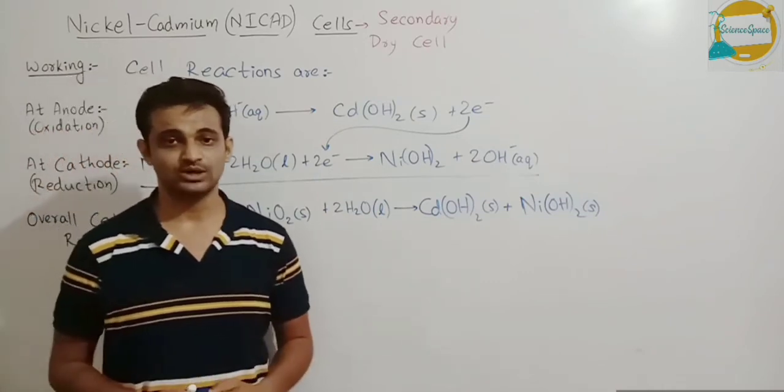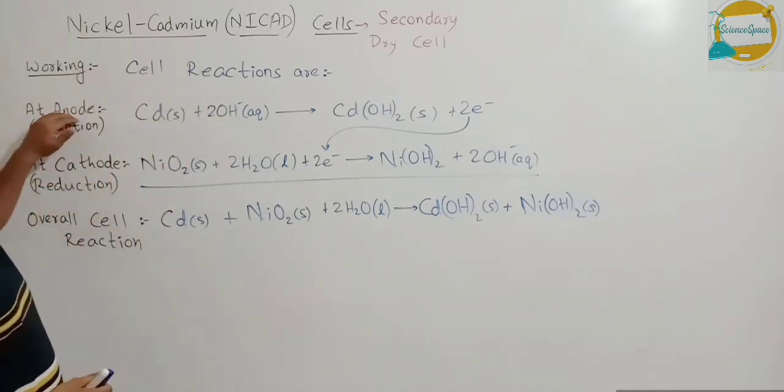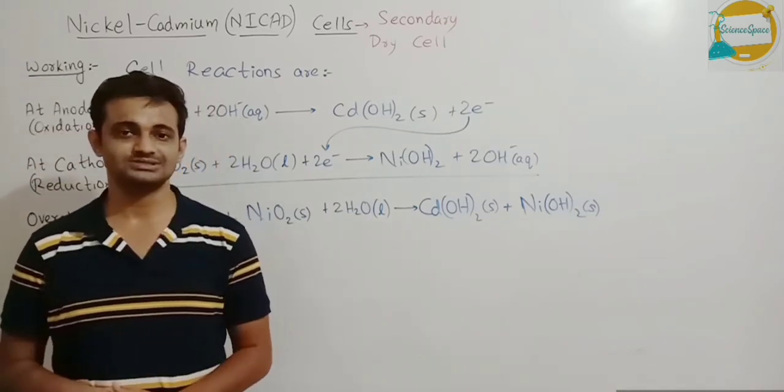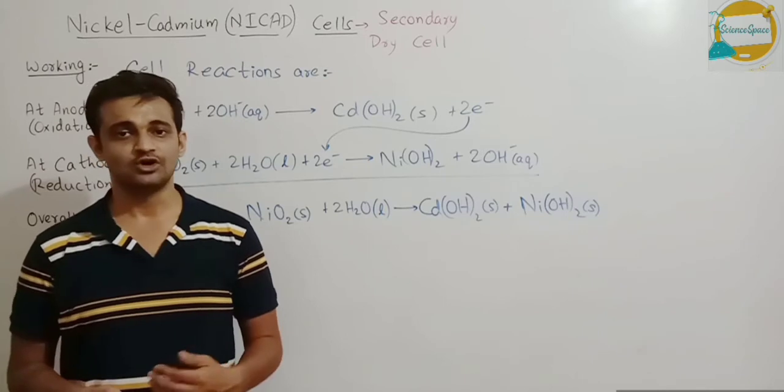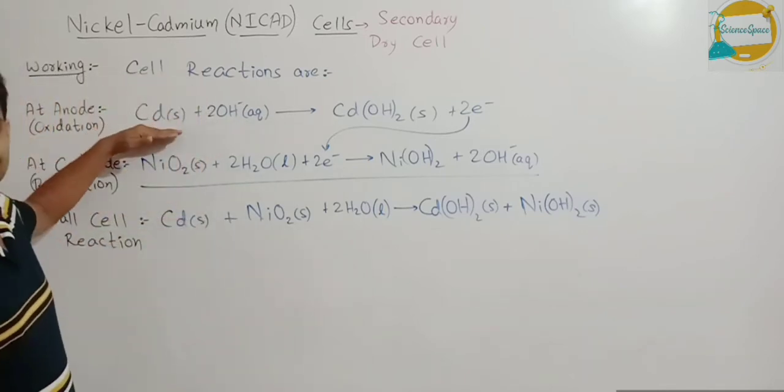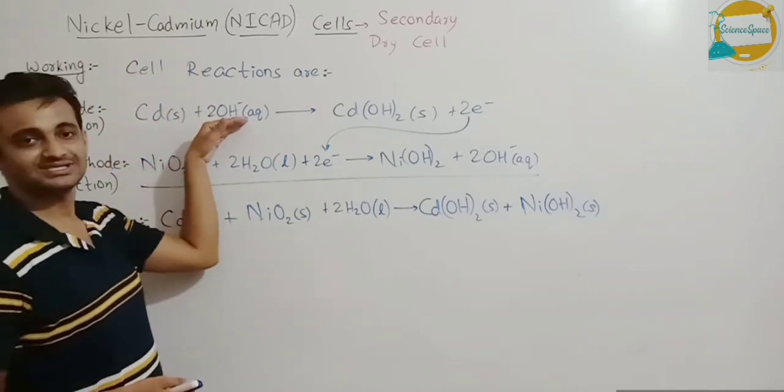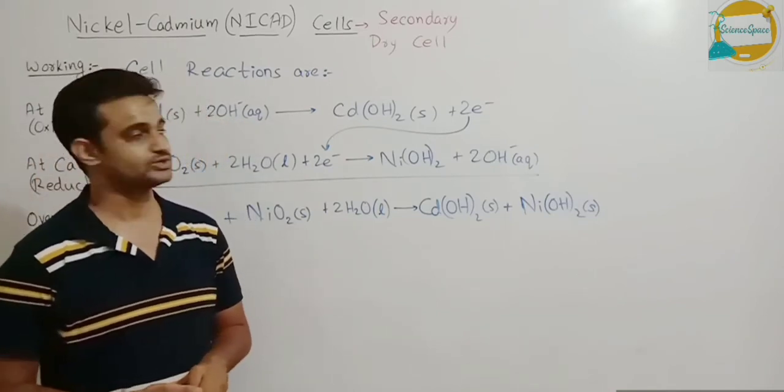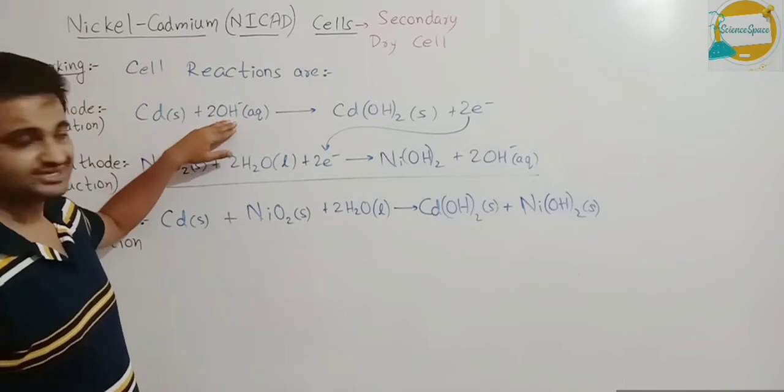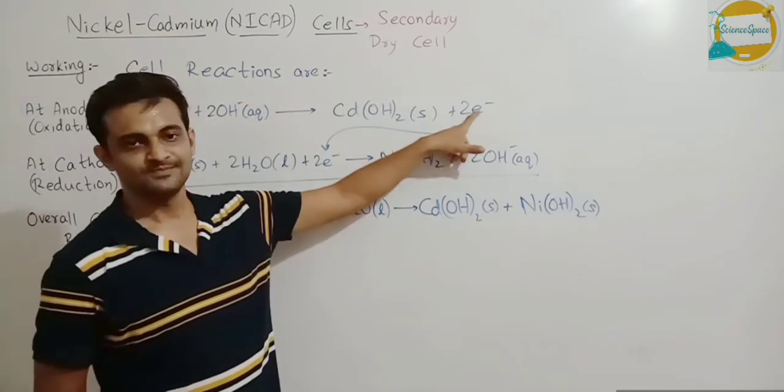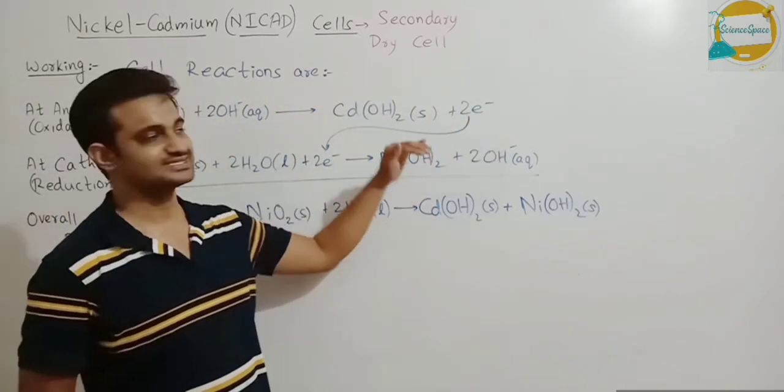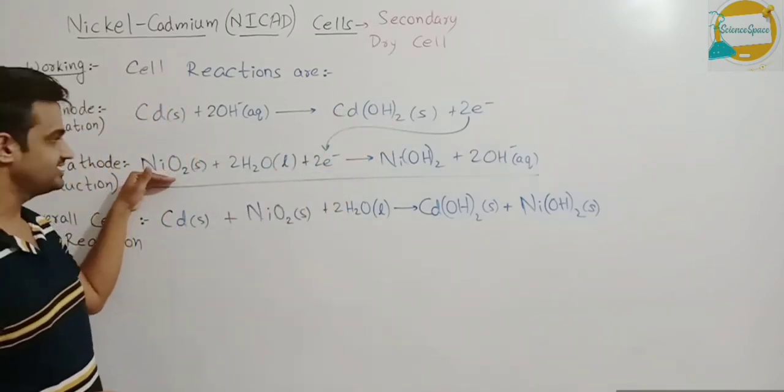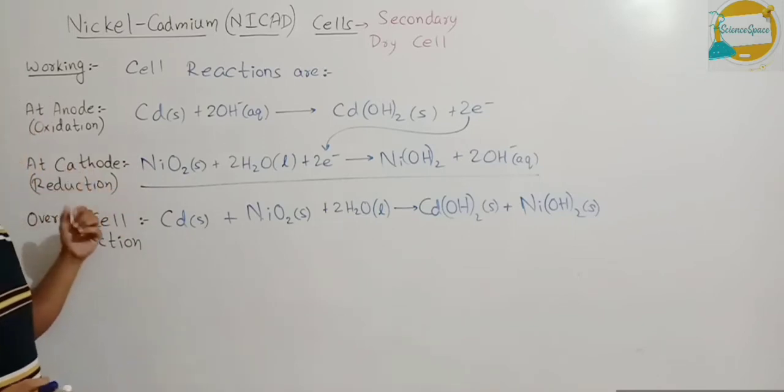Now let us revise it once. So at anode, anode per kya hooga? Oxidation hoota anode per. What is oxidation? Loss of electrons by an electrode is called oxidation. So cadmium, yaha par cadmium hydroxyl ions ke saath combine karra hai, hydroxyl ions kaha par produce honge into the electrolyte solution. So these hydroxyl ions will release two electrons.